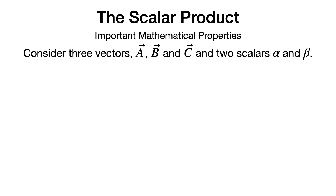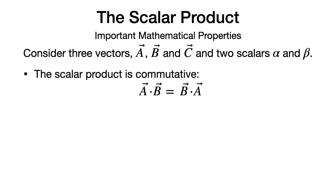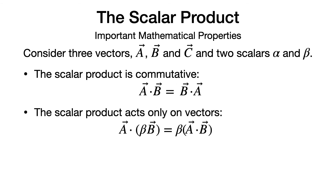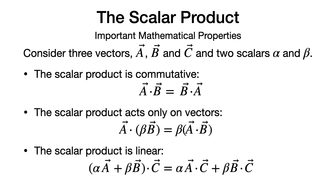Now consider some additional important mathematical properties. Given three vectors a, b, and c, and two scalars alpha and beta: the scalar product is commutative — a dot b equals b dot a. The scalar product acts only on vectors, so if I have a product of a scalar beta and a vector b dotted with a, it's the same as the scalar beta multiplying the dot product a dot b. The scalar product is also linear: if I have alpha times a plus beta times b, all dotted with another vector c, it equals alpha times (a dot c) plus beta times (b dot c).